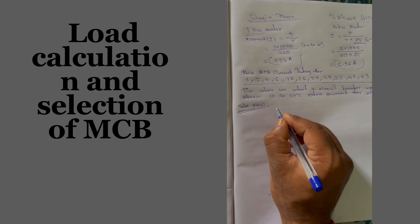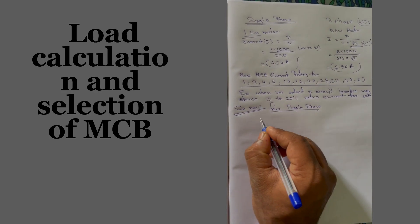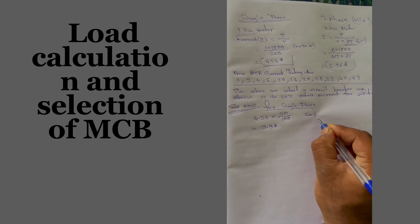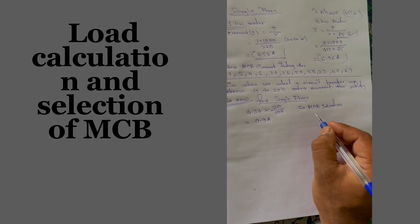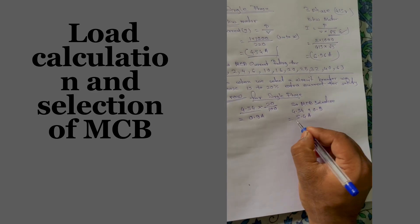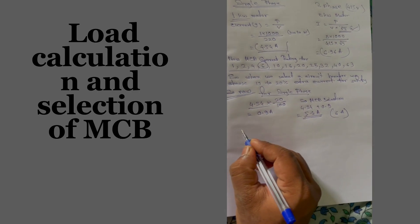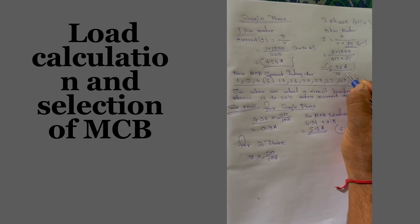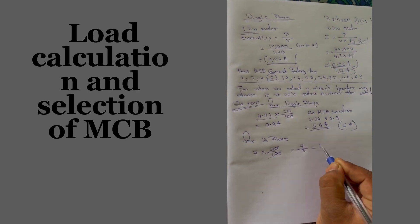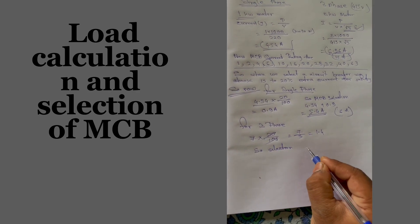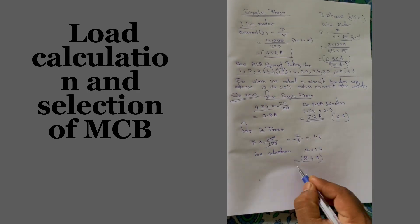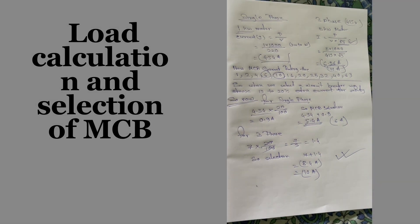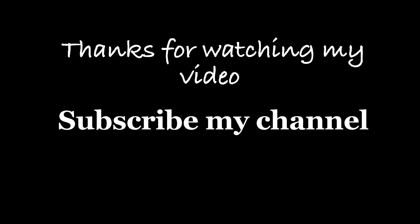For the single-phase one kilowatt motor, calculated current is 4.54 A. Adding 20% extra: 4.54 × 20 ÷ 100 = 0.91 A. Total = 4.54 + 0.91 = 5.45 A. Since 5.45 A is not a standard rating, we select 6 amperes. For the three-phase motor, calculated current is 6.96 A, approximately 7 A. Adding 20%: 7 × 20 ÷ 100 = 1.4. Total = 8.4 A. Since 8.4 A is not available, we select 10 amperes.